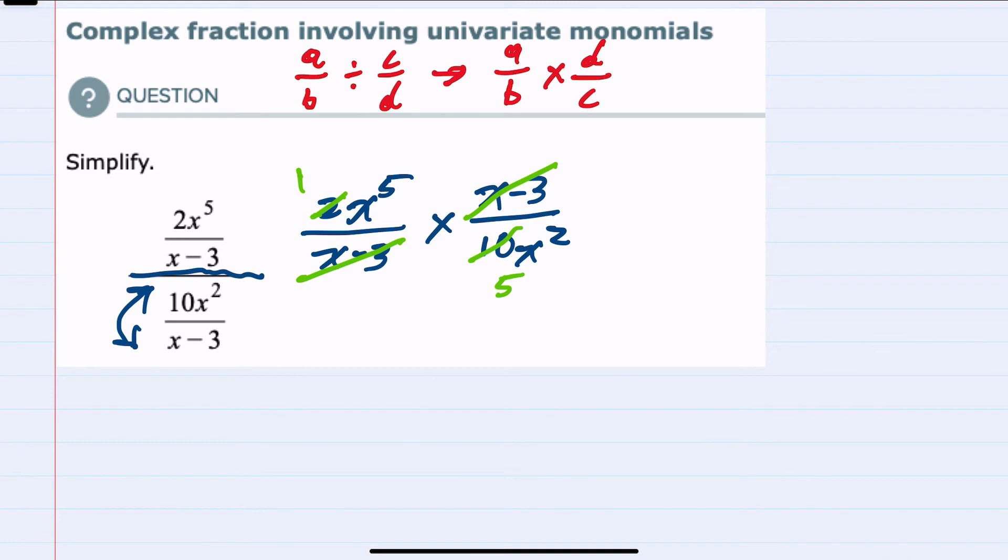And here we can see that we have 5 x's in the numerator being multiplied, and 2 x's in the denominator being multiplied. So these 2 x's cancel 2 of these x's, leaving me with 3 x's.